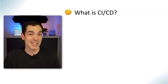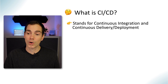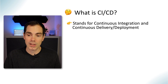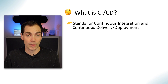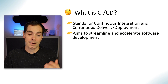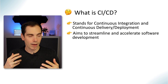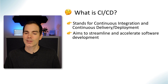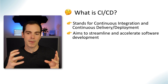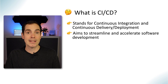So what is a CI/CD system? CI/CD stands for Continuous Integration and Continuous Delivery or Deployment. Basically, it aims to streamline and accelerate software development. That's the main goal of a CI/CD system — to build something, to streamline a process of building and releasing products.